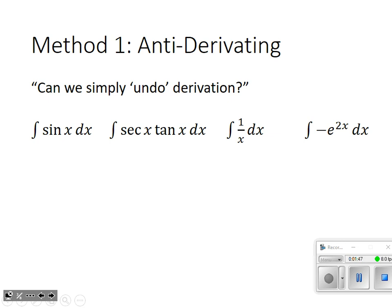The first example: the integral of sine x dx. What function produces a derivative of sine x? It's cosine x, but cosine x turns into negative sine x. So we need a negative sign out front. And because there could have been a constant that disappeared when we differentiated, we need an arbitrary plus c at the end.